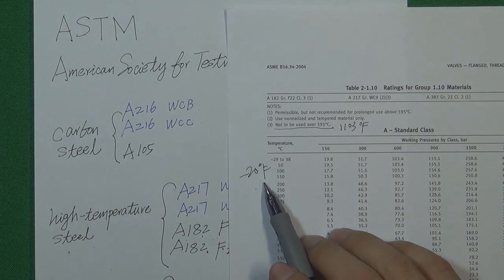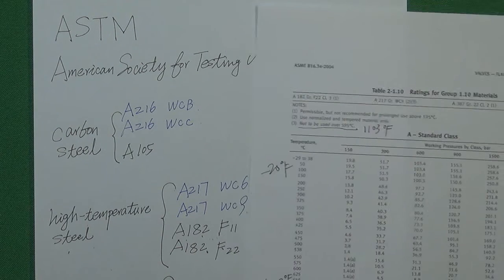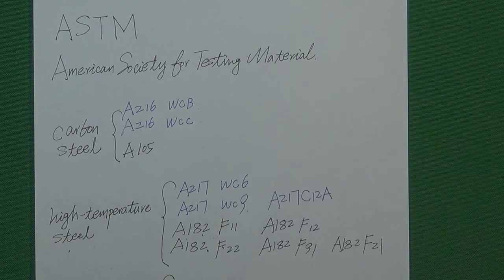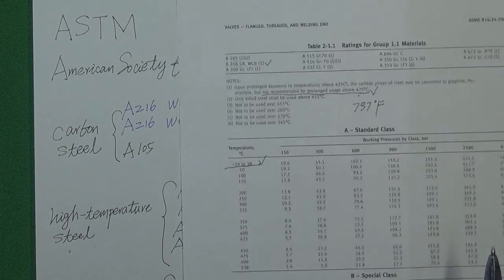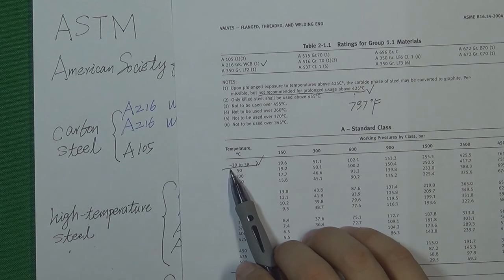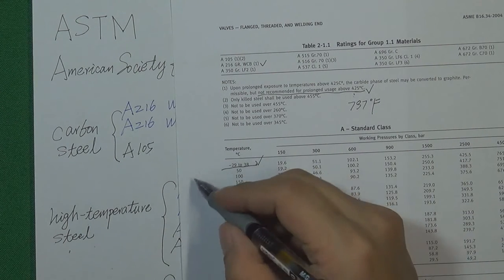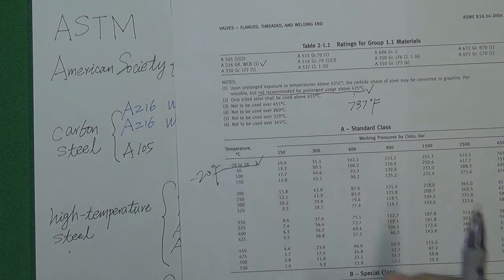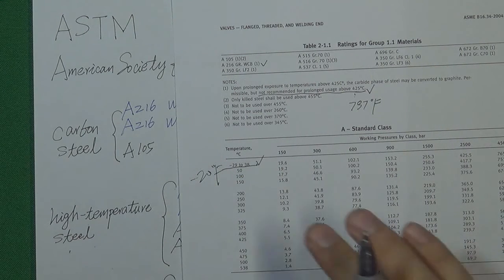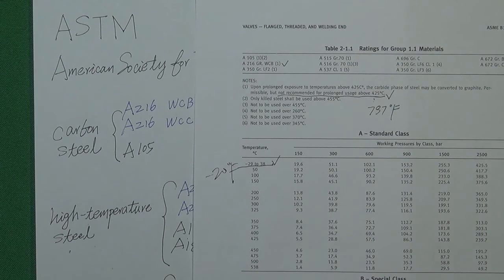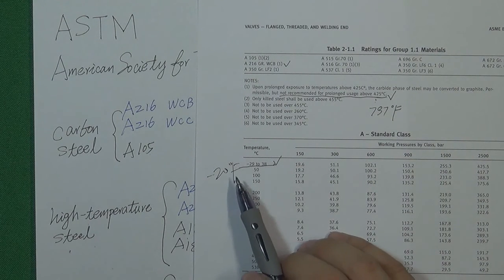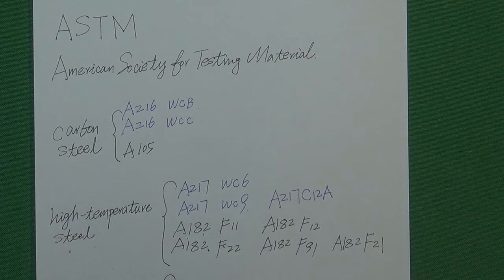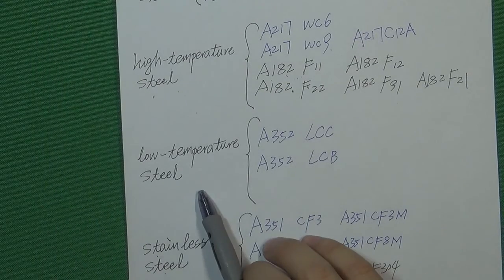That is the minimum temperature for the WC9. And for the carbon steel like the WCB, the minimum temperature is the same — minus 29 Celsius degree, which also equals minus 20 Fahrenheit degrees. So this kind of material cannot work in a low temperature environment below that. So material engineers invented a kind of material called low temperature steel.